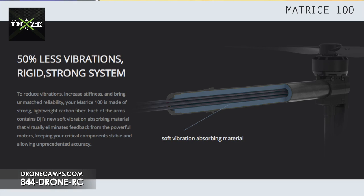Up next is new DJI technology: they've added soft vibration-dampening material inside the arm of the Matrice 100 to take out a lot of the vibration coming down the motor stem and motor arm toward your center plate. You want to reduce vibration there as much as possible, and DJI is actively helping with that.